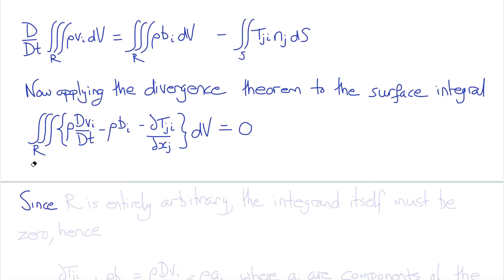As we've done before, we note that since the region R over which this integral must hold is entirely arbitrary and must hold for any and all regions, the integrand itself, the expression inside the integral, must be zero.